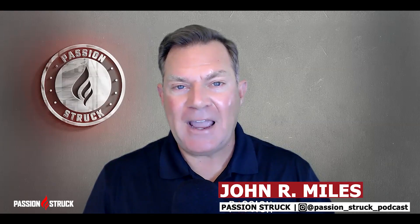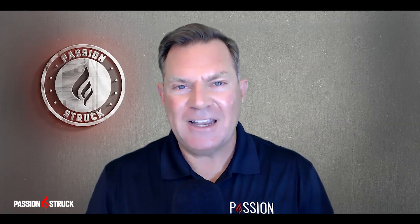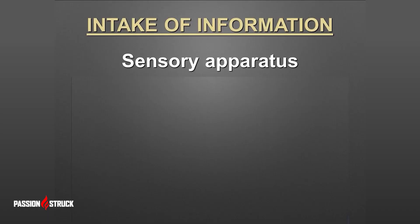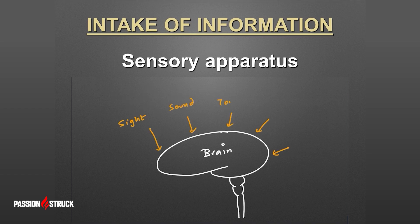There are actually three aspects of learning. The first is known as intake. This is the brain's taking in of new information through a sensory apparatus such as the skin, tongue, nose, ear, or eye to generate the sense of touch, taste, smell, sound, or sight, respectively.